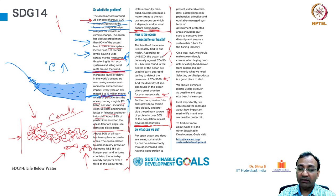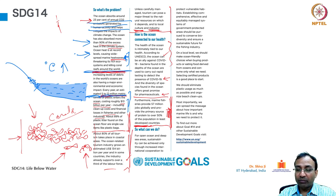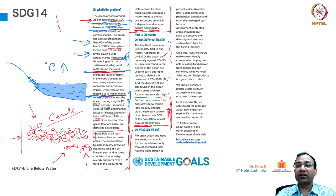What can be done? For open ocean and deep sea areas, sustainability can be achieved only through increased international cooperation to protect vulnerable habitats. Establishing comprehensive, effective and equitably managed systems of government protected areas should be pursued to conserve biodiversity and ensure a sustainable future for the fishery industry.